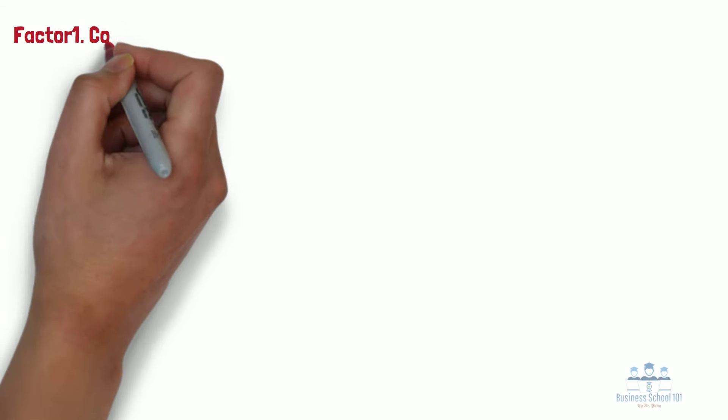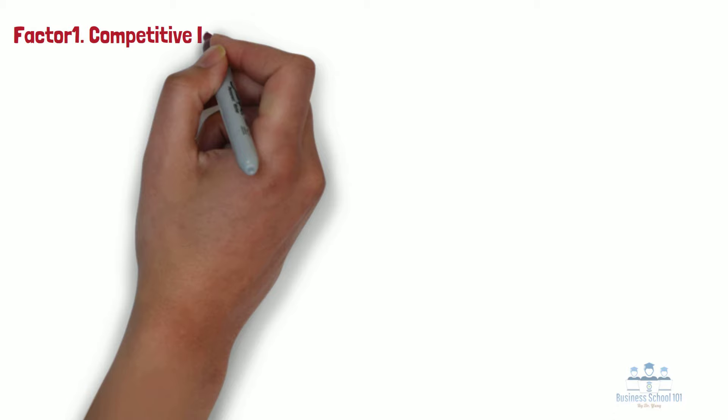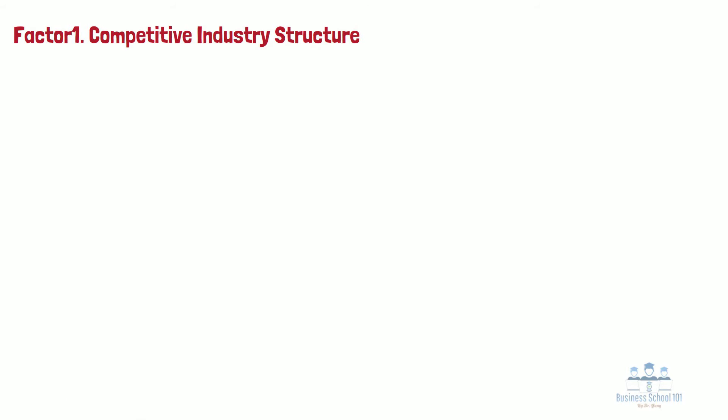Factor 1: Competitive industry structure refers to elements and features common to all industries. The structure of an industry is largely captured by the number and size of its competitors, the firm's degree of pricing power, the type of product or service, and the height of entry barriers.